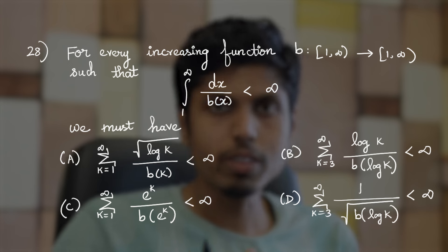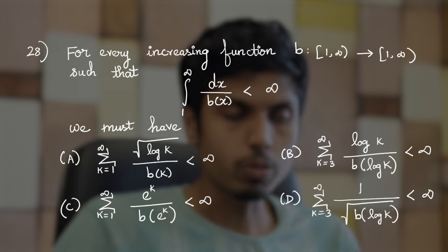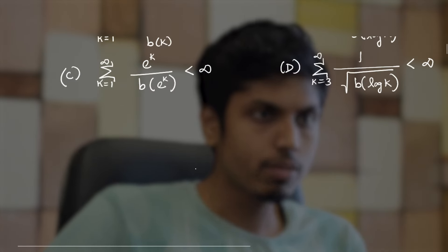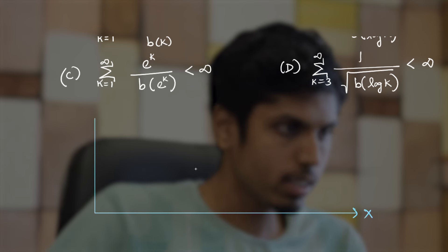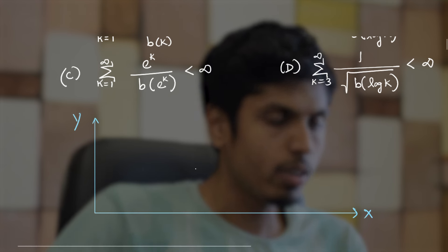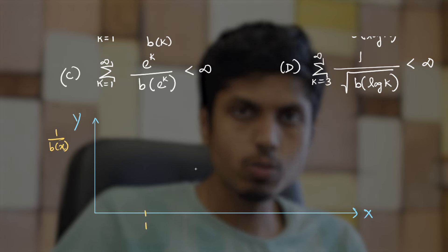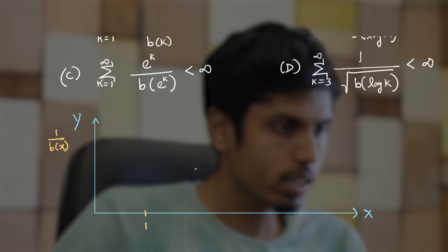Let's deduce something out of the integral given to us. We know that b is an increasing function, so let us try to plot it. Let's say this is our x-axis and this is our y-axis and we are going to plot 1/b(x) with x. Since the domain is 1, let's start with 1 and the value it takes is 1/b(1).